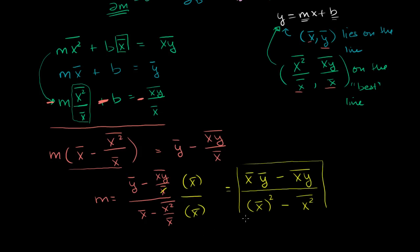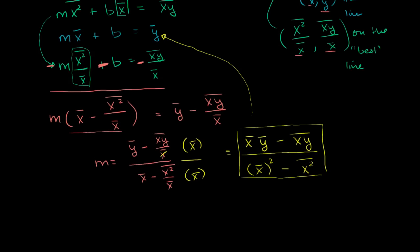And then if we want to solve for b, we literally can just substitute back into either equation, but this equation right here is simpler. And so if we wanted to solve for b there, we can solve for b in terms of m. We just subtract m times the mean of x's from both sides. We get b is equal to the mean of the y's minus m times the mean of the x's.